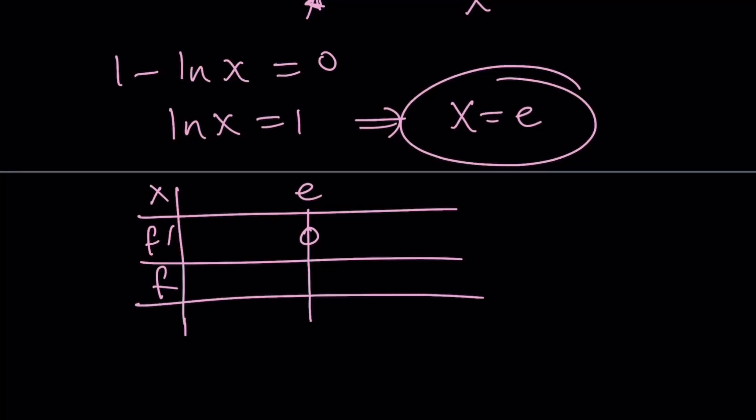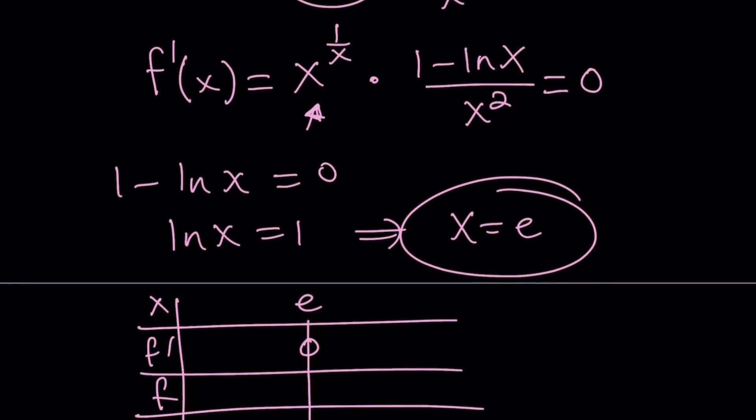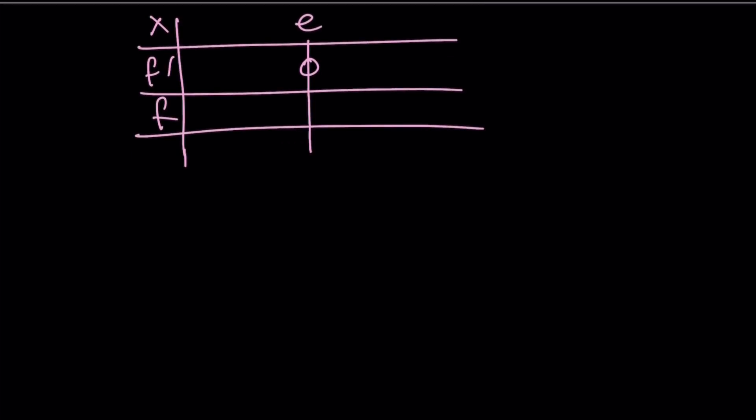Now, I want to check to the right and to the left of e. I want to find the sign of the derivative. Now, notice that x to the 1 over x is always going to be positive. 1 minus ln x and x squared is also positive for non-zero values. So, the only thing that matters is 1 minus ln x. So, 1 minus ln x is what we need to look at.